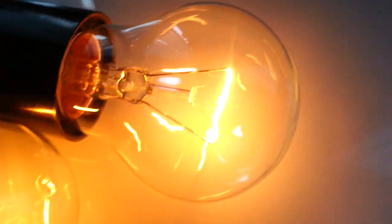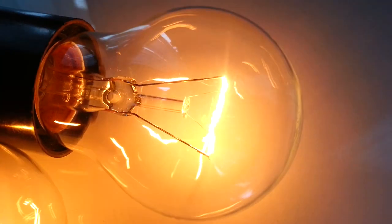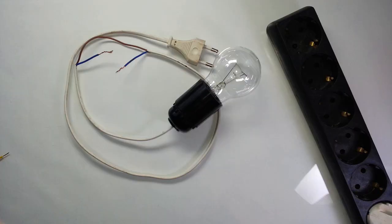Well, now we know why bulbs burn out and how to make them work longer. Now I'll show you two simple tricks that will lower the power consumption and therefore significantly increase the lifespan of light bulbs. So trick number one: using a diode.